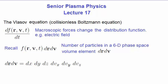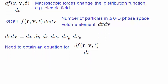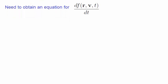We now need to obtain an expression for the rate of change of the distribution function. It's difficult to imagine a six-dimensional phase space, so we'll obtain an expression in a two-dimensional phase space, and then finally generalize to the six dimensions.